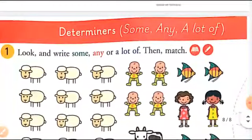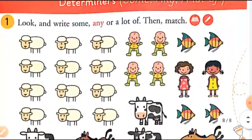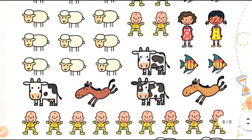Now we come to the exercise on determiners — some, any, a lot. Look at the picture and write 'some', 'any', or 'a lot'. In the first picture you can see some sheep, or you can say a lot of sheep because their quantity is large. Then some children, some girls, some sheep, some cows, a lot of children.